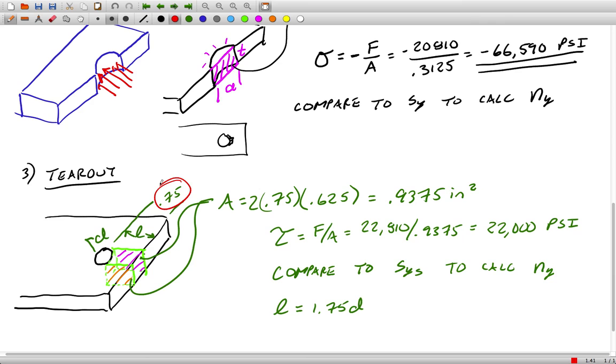Different industries will specify different values. Even different use cases within the same industry might specify different values, but in this case this is just a very general kind of value that I pulled out of an old reference.